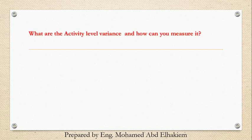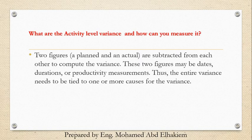What are the activity level variants and how can you measure them? Two figures — a planned and an actual — are subtracted from each other to compute the variance. These two figures may be dates, durations, or productivity measurements. Thus, the entire variance needs to be tied to one or more causes for the variance.